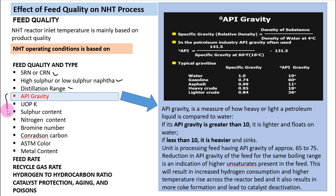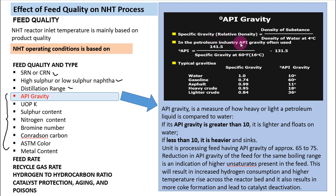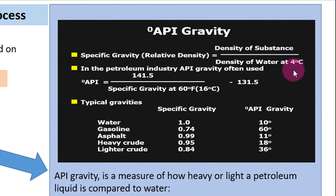In this video lesson I'll discuss API gravity. API gravity is basically a measure of how heavy or light a petroleum liquid is compared to water. To understand this, recall from school or college how we calculate specific gravity — that is relative density — which equals the density of a substance divided by the density of water at 4°C.